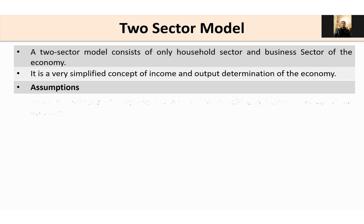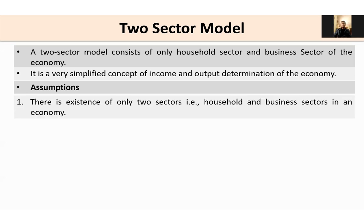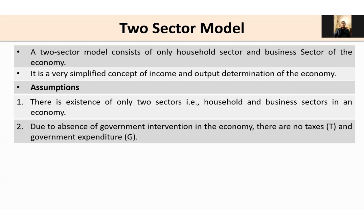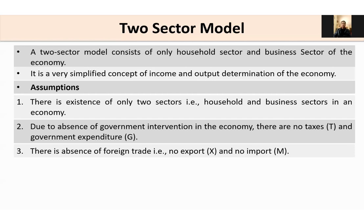Now let's discuss the assumptions of this model. First, there is existence of only two sectors — the household sector and business sector — in the economy. Due to the absence of government intervention, there is no government sector, and therefore no taxes and no government expenditure.